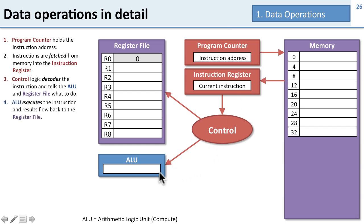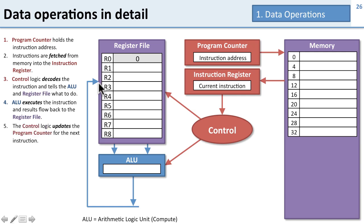Finally, the ALU executes the operation by taking data from the register file and writing the result back into the register file when it's done. The control logic also updates the program counter to indicate the next instruction — whether we're going to branch, jump, or just go on to the next instruction. This is an overview of the processor, and now we're going to walk through some programs to see how they all come together.